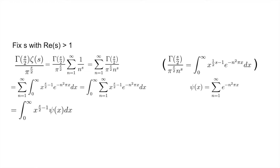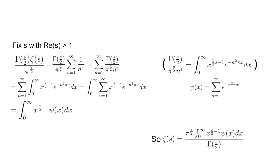Isolating the zeta function on the left hand side, we get that zeta of s equals pi to the power of s over 2 divided by gamma of s over 2, times the integral of x to the power of 1 half s minus 1 times psi of x dx.